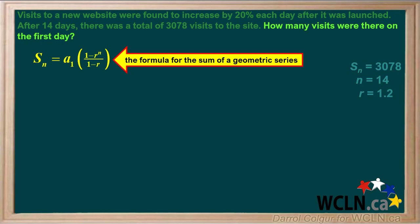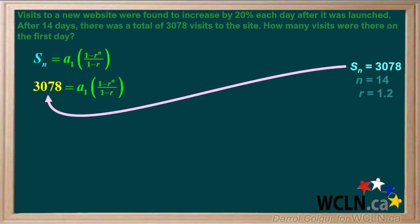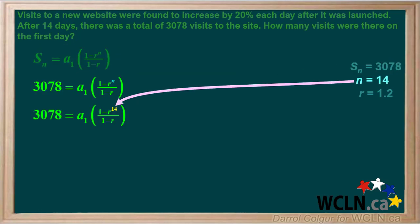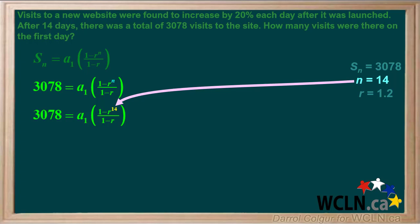To find the number of visits on the first day, we'll write the formula for the sum of a geometric series, put in the values we know, and solve for the first term a1. We can put in 3078 for the sum Sn, 14 for the number of terms n, and 1.2 for each r in the formula.